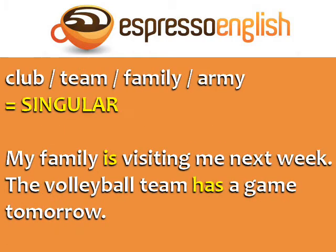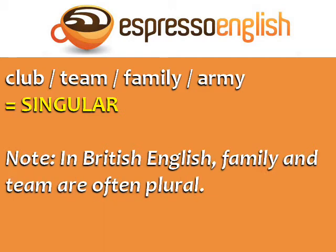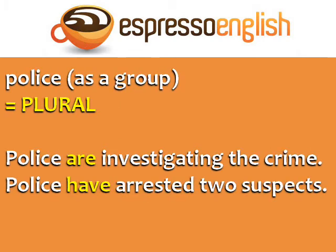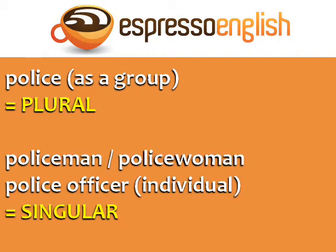Club, team, family, and army are other examples of words that refer to a group of people, but they are singular. For example: 'my family is visiting me next week' and 'the volleyball team has a game tomorrow.' In British English, 'family' and 'team' are often plural. The word 'police' as a group is plural. If you want to talk about an individual person who is part of the police, you can say 'policeman,' 'policewoman,' or 'police officer.'